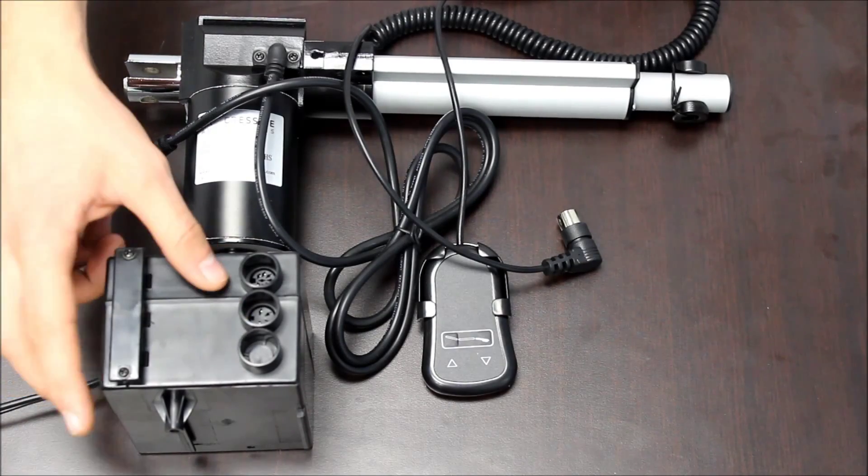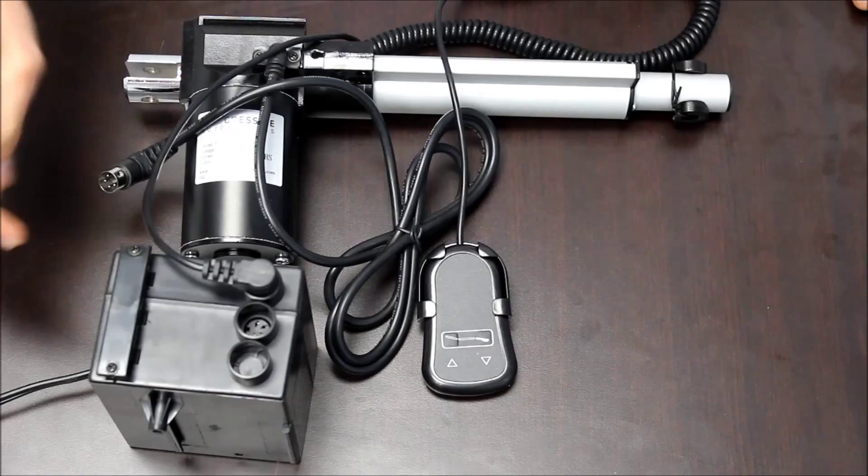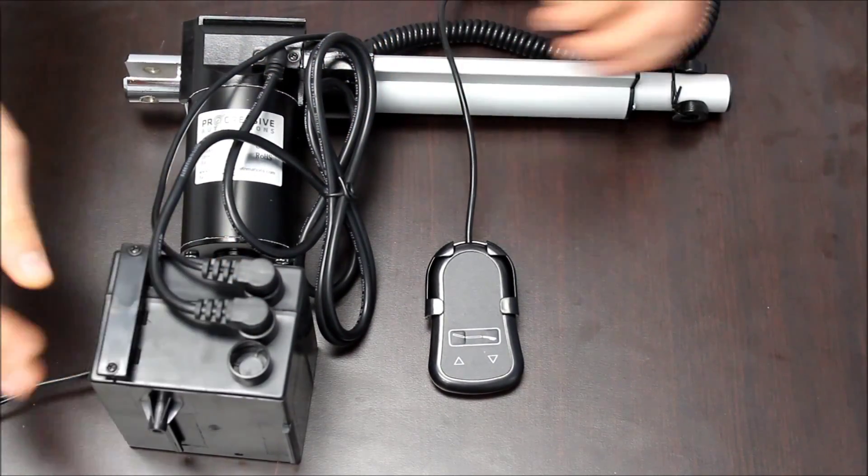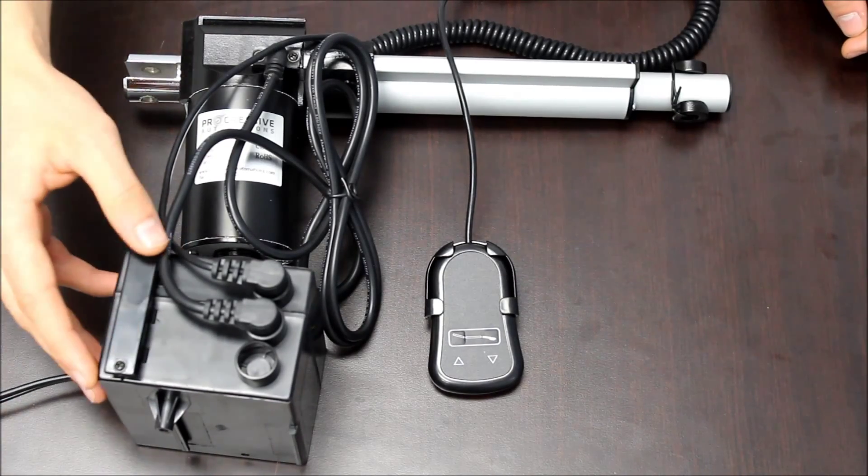There are two connections on the top. One is for the hand remote and the other is for the actuator. You can unscrew this bar on the side and tuck the cables under and then screw it back to keep the cabling neat.